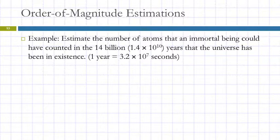So then you can do a problem like this without using a calculator. Estimate the number of atoms that an immortal being could have counted in the 14 billion years that the universe has been in existence, and they're telling us that one year is equal to 3.2 times 10 to the 7 seconds. So do we know that the universe has existed for exactly 14 billion years? No. That's someone's best estimation. I'm sure there's lots of people that would disagree with that, but we're just going to go with it.